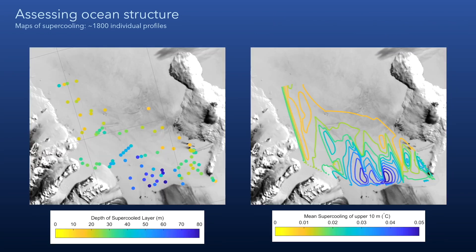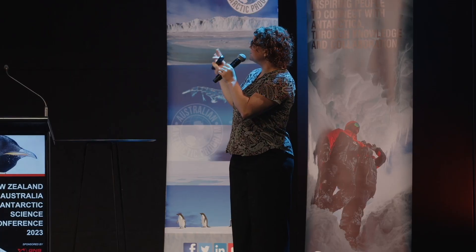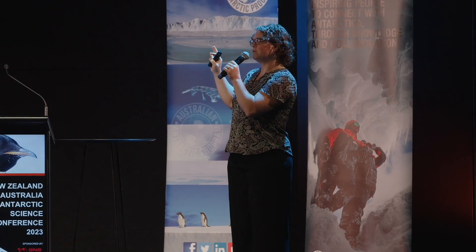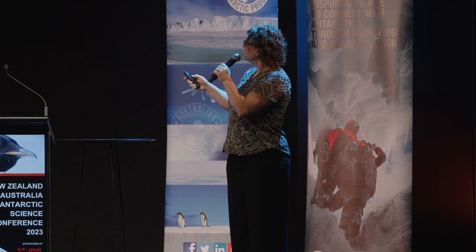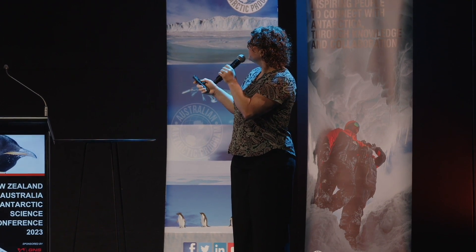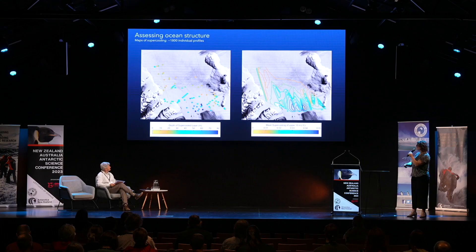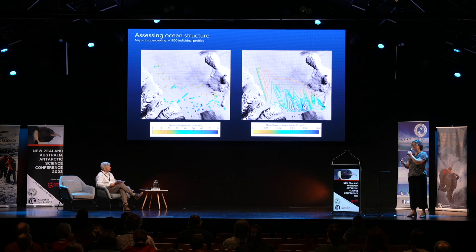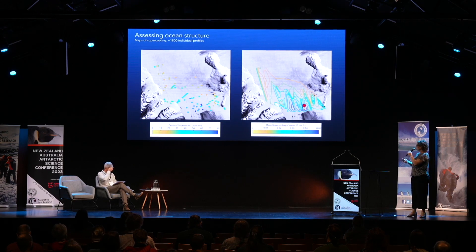In the meantime, I've QC'd 1800 profiles taken through McMurdo Sound to produce maps of the supercooling in the sound. The problem with these maps is that they're biased by the period we're able to go and collect the data, which typically is October and November of each year. So there's a lot of the year that's not being captured.